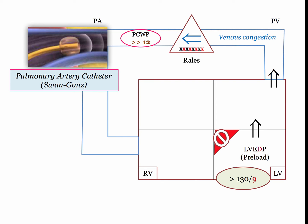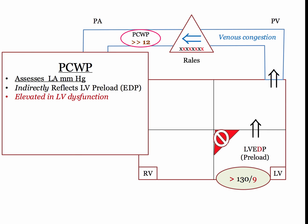Working backward from the left ventricle and elevated end diastolic pressure, we can actually measure those pressures using a pulmonary artery catheter, also called a Swan-Ganz catheter. The wedge pressure is elevated from baseline in LV failure. Although it is used to assess LV end diastolic pressure, in reality it is measuring the LA pressure, which in most instances indirectly reflects left ventricular preload. In LV failure, the pulmonary capillary wedge pressure will be elevated.